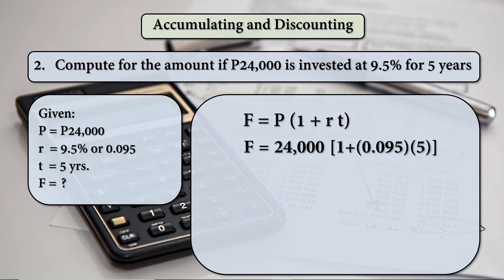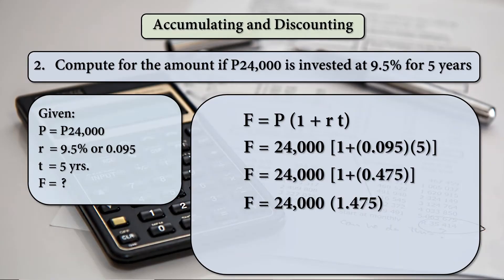Substitute using the same formula: 24,000 times 1 plus 0.095 times 5. 0.095 times 5 resolves to 0.475. 1 plus 0.475 is 1.475. Then F is 35,400 pesos. That is the amount.